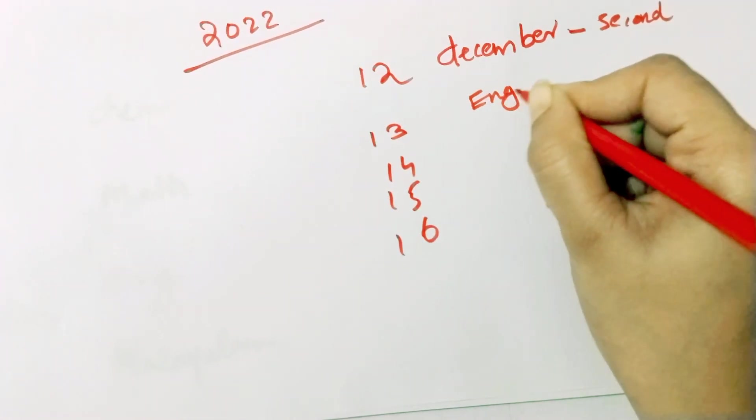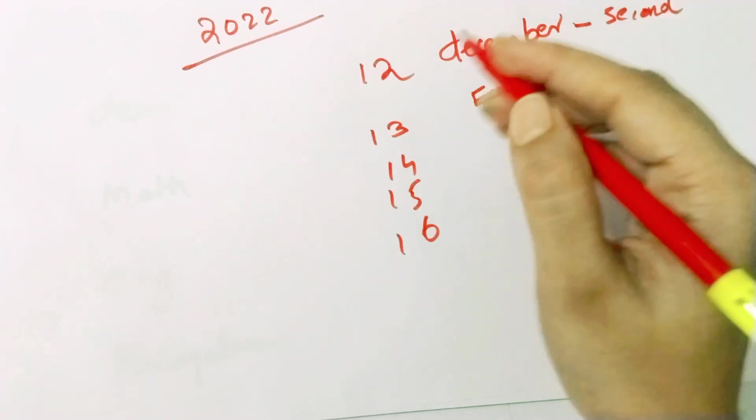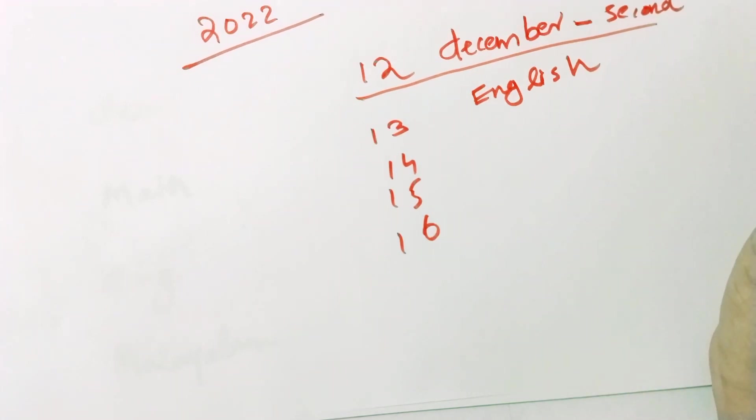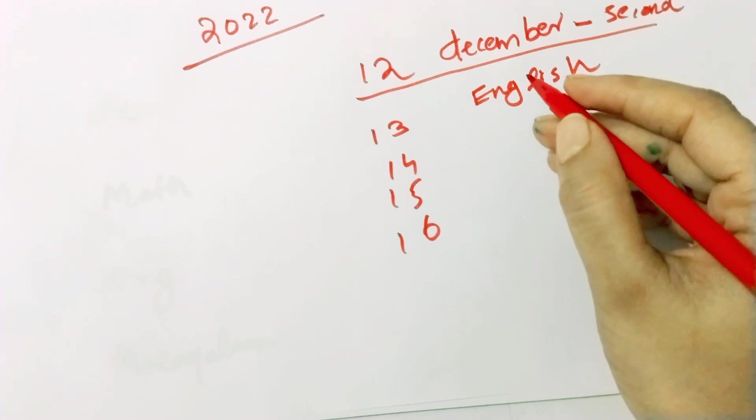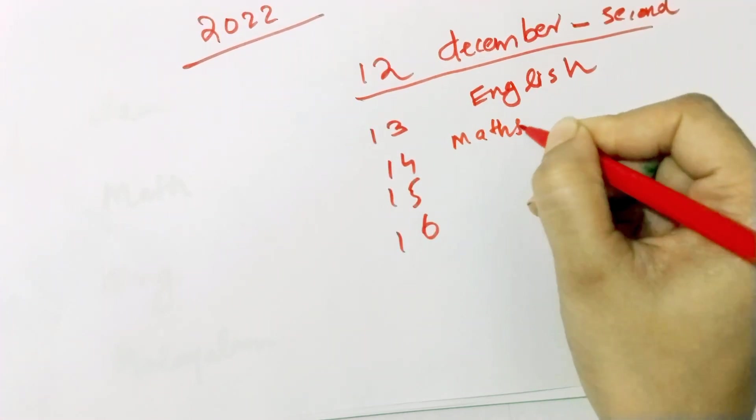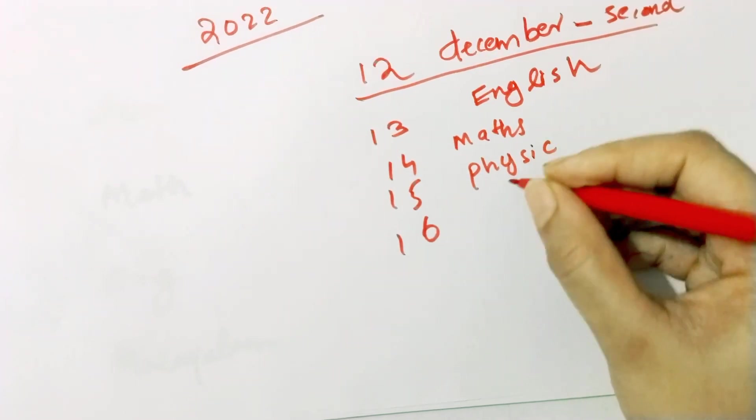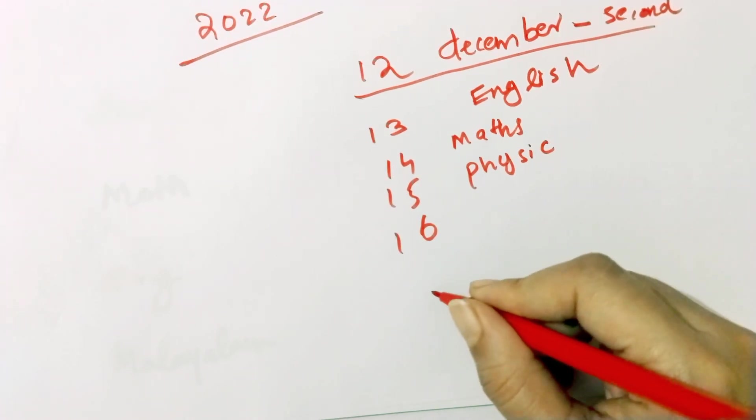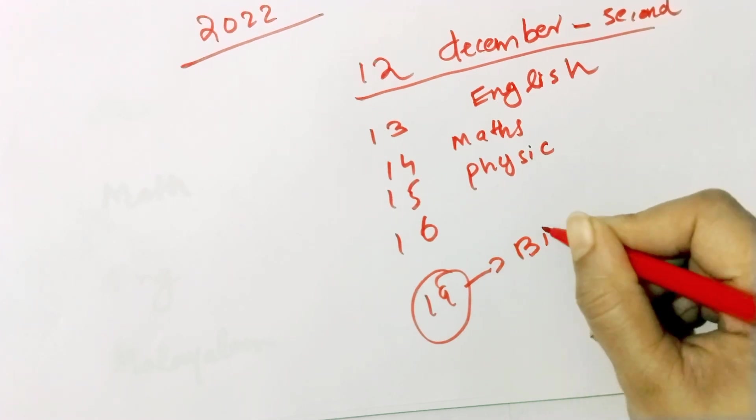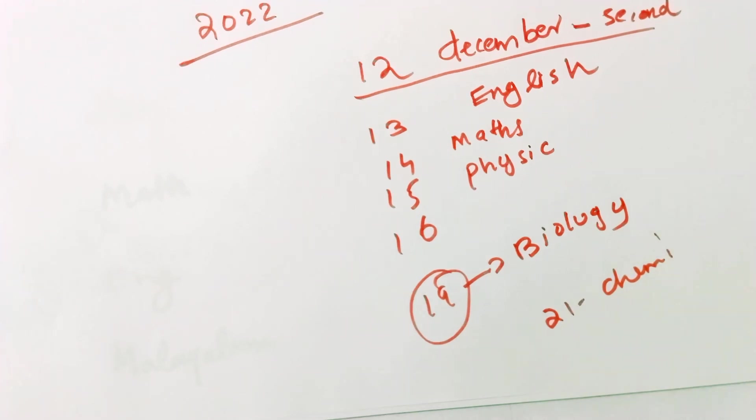You'll have Hindi or English. Then you'll have Maths. From science, you'll have Maths, and Physics. Then we'll have gaps in different fields. In the 19th, you will get biology exam. The 21st is chemistry. This year, you will get biology and computer science.